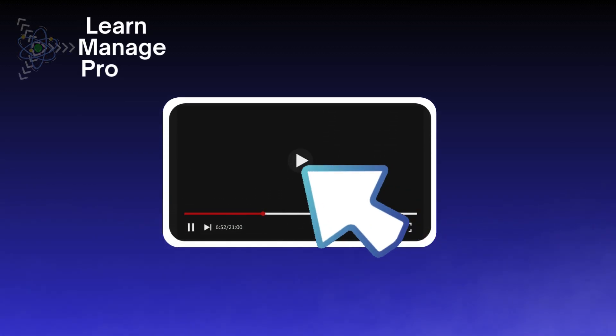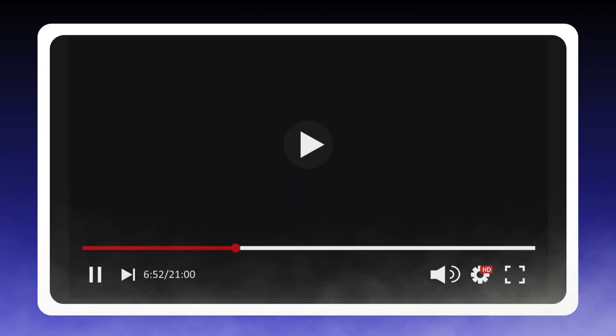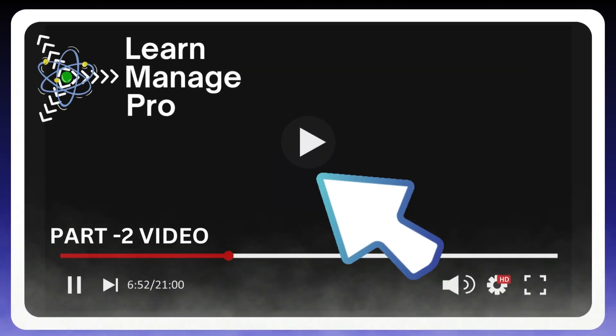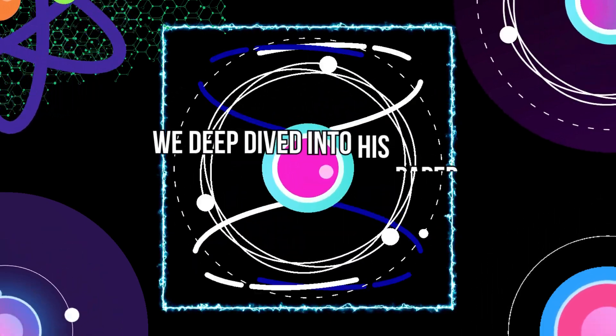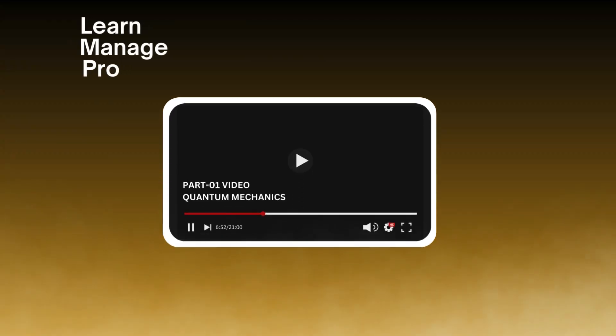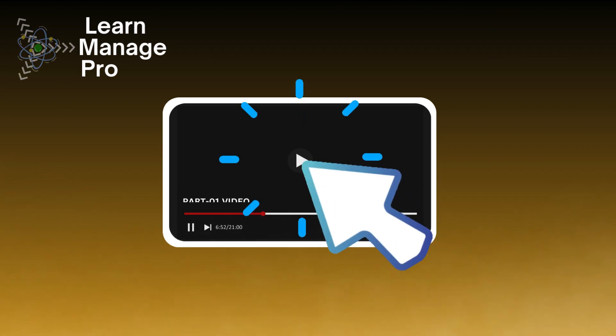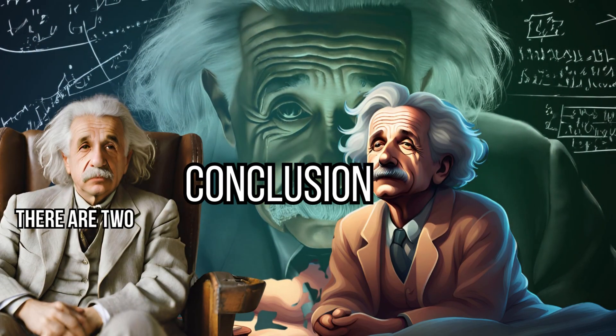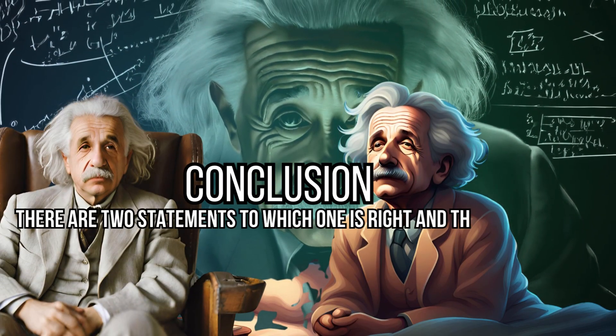We have covered about halfway there in our previous video as part one. The rest of this will be explained here as part two of the video. We deep dived into his paper and some fundamentals of quantum mechanics. Make sure to watch that video after this, but to summarize it, Einstein concluded that there are two statements to which one is right and the other is wrong.